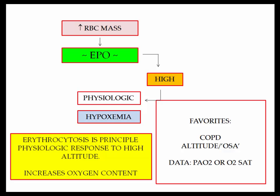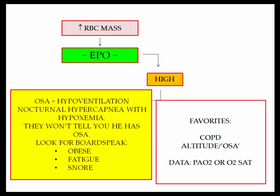We will cover the full cardiopulmonary response to altitude in the pulmonary section, but insofar as correcting the chronic hypoxemia associated with high altitude, elevation of the erythropoietin level with resultant erythrocytosis is the principal response to living at high altitude. The situation they like to sneak by you is the patient with obstructive sleep apnea. These patients hypoventilate — they are hypercapnic. If the PCO2 goes up, the PO2 goes down. This is Dalton's Law of Partial Pressures. They won't tell you the patient has sleep apnea; they'll talk in board speak. They'll describe an obese patient who is falling asleep, and the wife will report he snores. Bingo — the diagnosis is obstructive sleep apnea, and the erythrocytosis is physiologic.